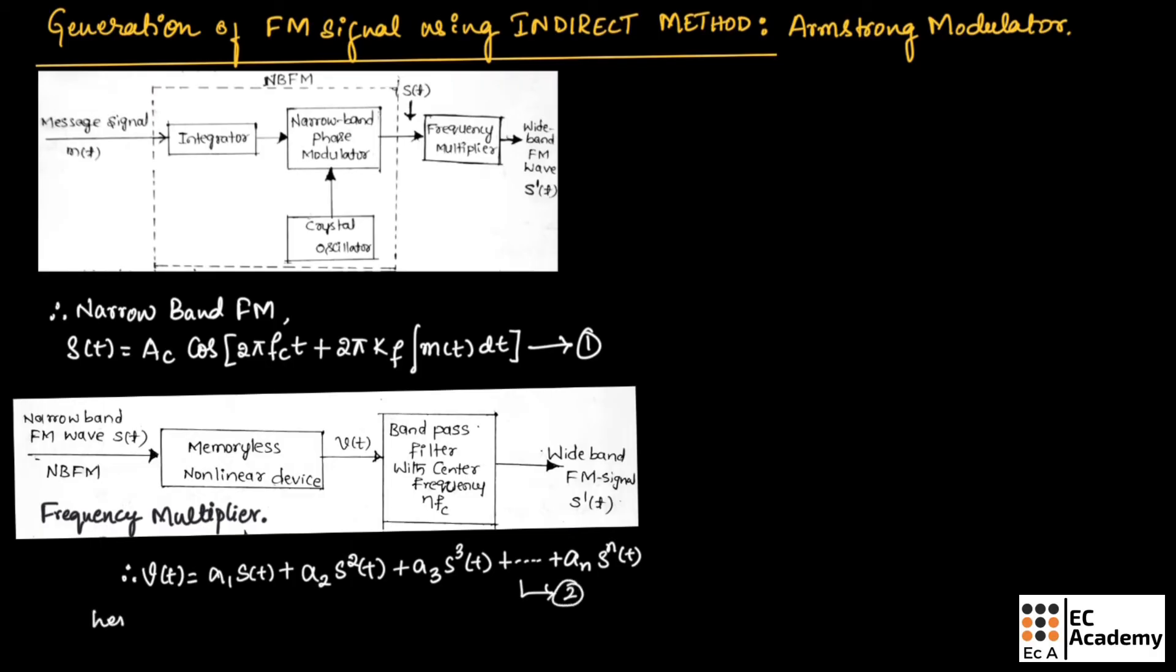Here, S(t) is narrow band FM signal with carrier frequency fc and modulation index beta. So, here S(t) is indicated in equation number 1.